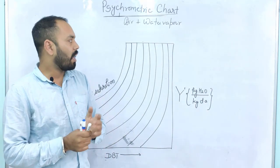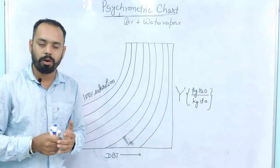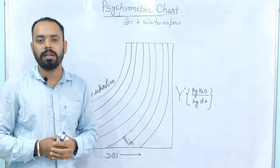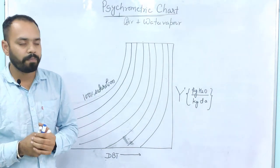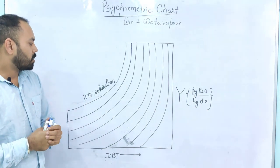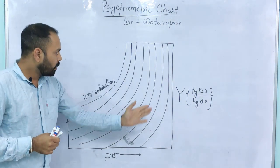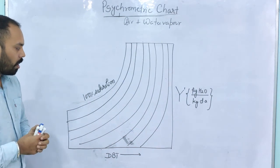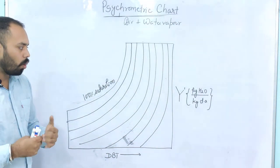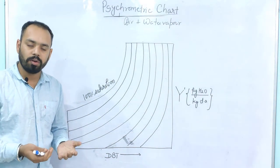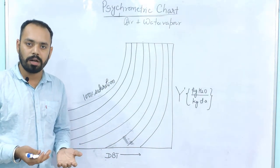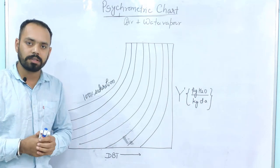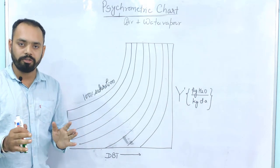The psychrometric chart is important for GATE Chemical as well as GATE Mechanical. I am not including all the parameters on the psychrometric chart — only those parameters will be discussed which are important for GATE.